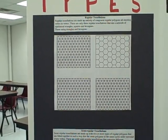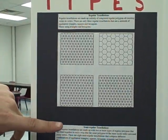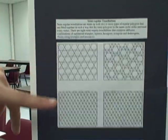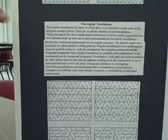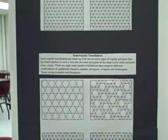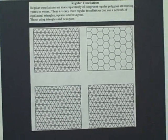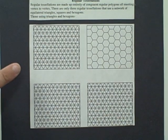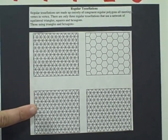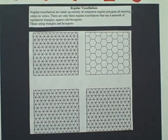There are three types of tessellations: regular tessellations, semi-regular tessellations, and non-regular tessellations. Regular tessellations are made up entirely of congruent regular polygons, all meeting vertex to vertex. You can only use triangles, hexagons, and squares in these, and these are some examples shown right there.